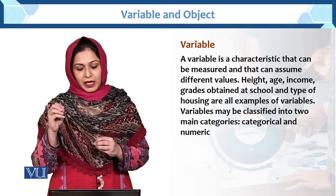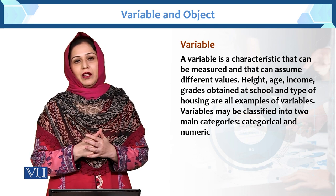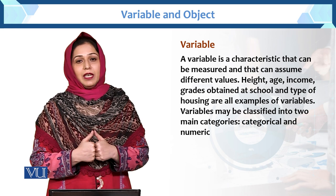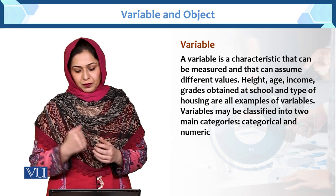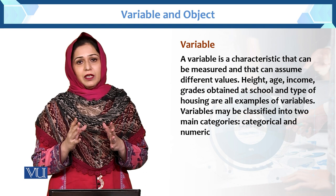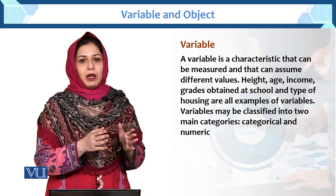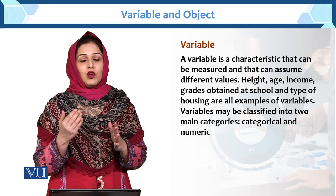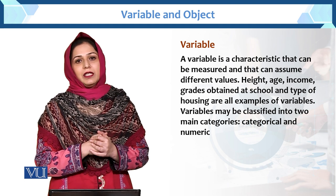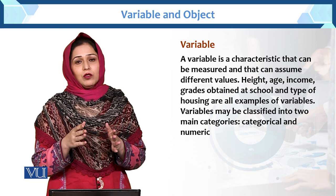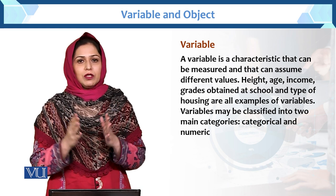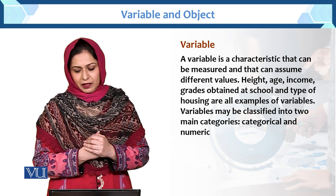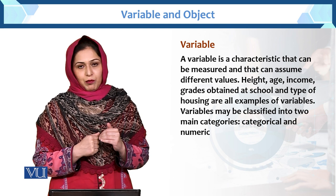Grades obtained at school — ab grades aap obtain kar rahe hain. Grades ko humne keh diya ke aap A grade, B grade, C grade students le rahe hain, so that is called the variable. Type of housing — humre paas medium house, small house aur large house, type of housing bhi vary kar raha hai. Isko hum variable keh sakte hain, further single bedroom, two bedroom aur three bedroom house — yeh bhi vary kar raha hai, this is also called the variable.